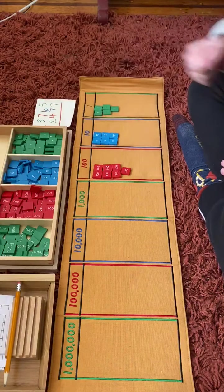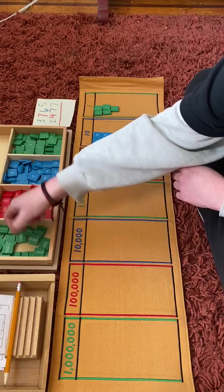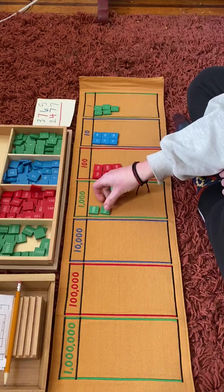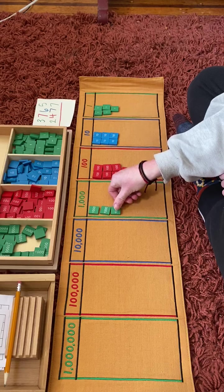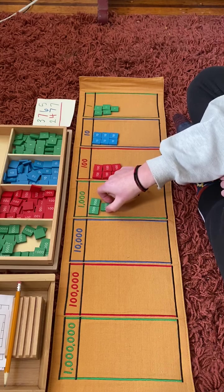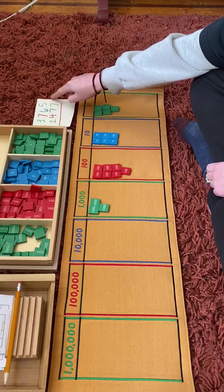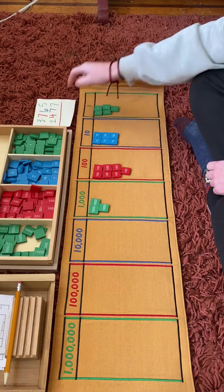And 3,000. 1, 2, 3. This is our first number, our first addend. Let's build our second one.